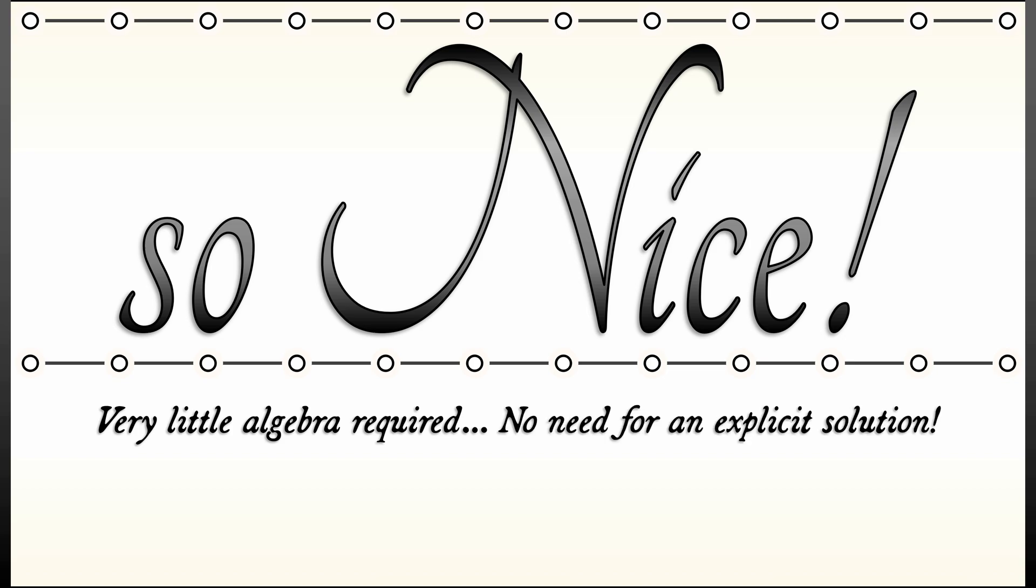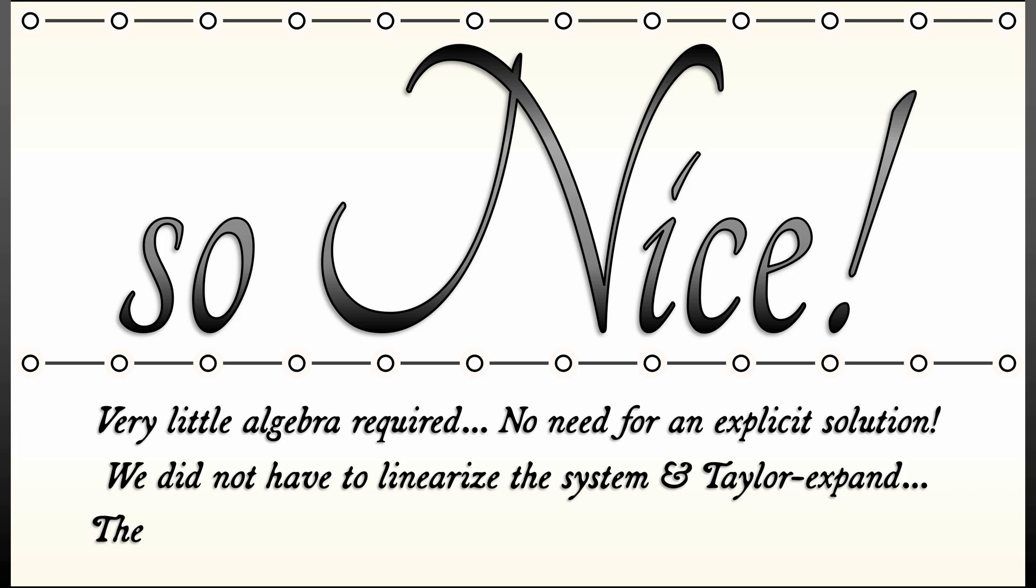Now, this is so nice. There was very little work required to do this. We didn't have to do any integration. We didn't have to do a whole lot of algebra. We didn't need an explicit solution. And we didn't need to linearize the system formally and do a formal Taylor expansion. The stability criterion requires that Taylor expansion for the proof. But to use it in practice, all you need to do is compute the derivative, evaluate it at the equilibrium, and as long as that is non-zero in a continuous time setting, boom, that's it. You're done.